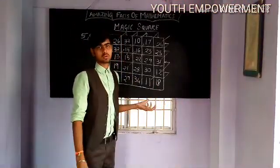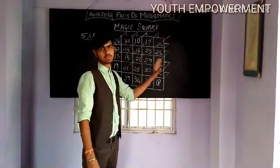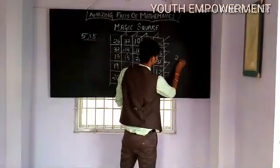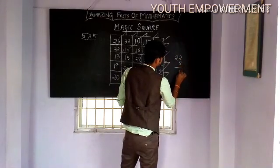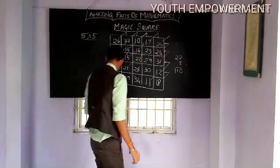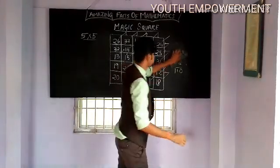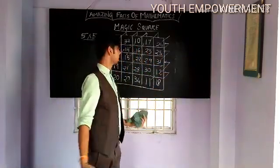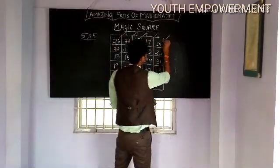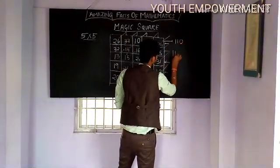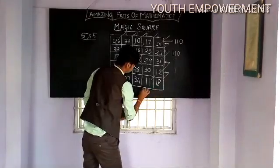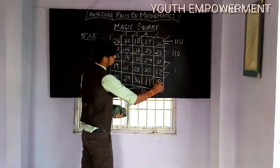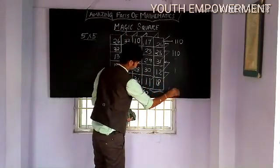Now, my dear friends, for the sum total — in order to find the total of all the rows, columns, and diagonals — we consider the middle box, that is 22, into 5. That gives 110. The amazing fact is: add all the rows, you will get 110. Add all the columns, you will get 110. Add all the numbers diagonally, you will get 110.